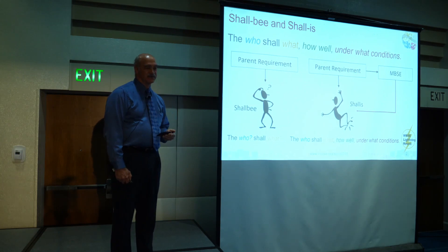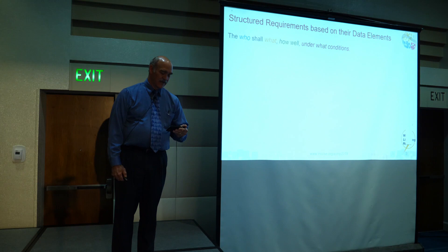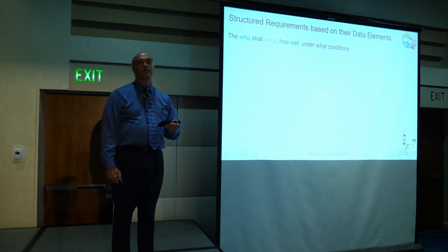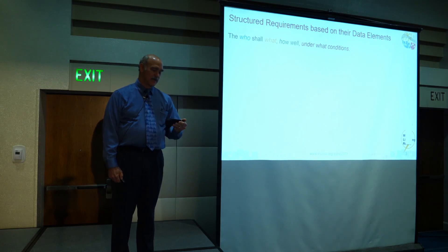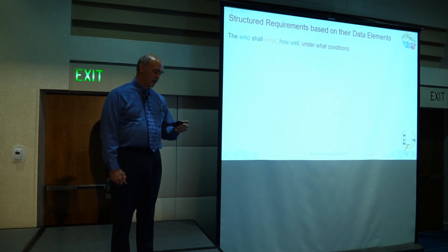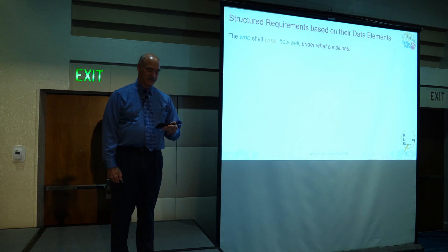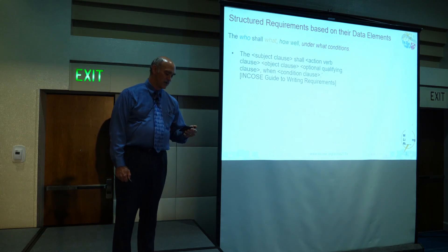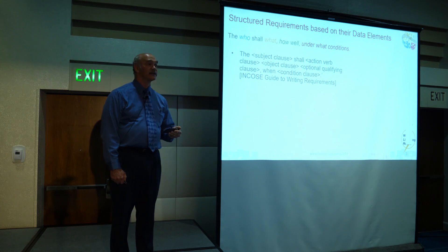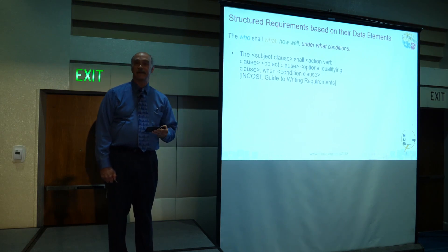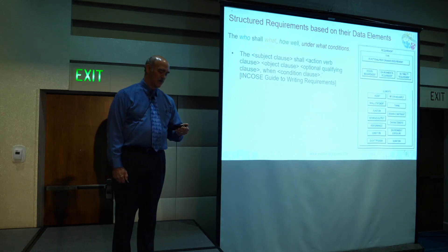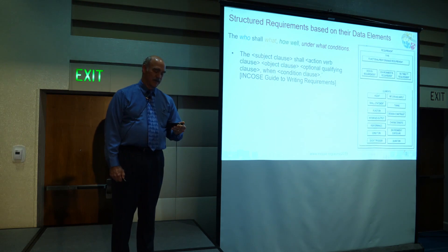So what can we learn from Shall Be and Shall Is? If we're going to improve requirements quality, the first thing we must do is identify the elements of the requirement based on who, what, how well, and under what conditions. We can use the INCOSE Guide to Writing Requirements, which has the subject and other clauses as defined in the guide, and ISO 29148. What is important is to clearly parse and identify the elements of a requirement by requirement type or template.